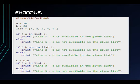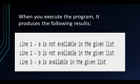Now for an example, let's assume that variable A holds the value 10 and variable B holds the value 20. We will make a list of 1, 2, 3, 4, and 5. We will check if variable A is in the list or if variable B is not in the list. Using the program, it produces the following results.